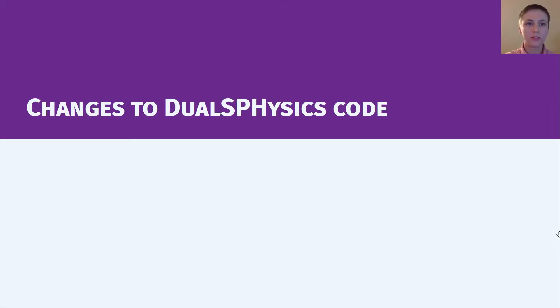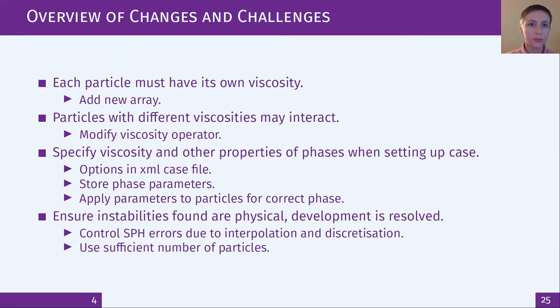Next the changes I've made to the DualSPHysics code. As an overview for variable viscosity between particles we must introduce a viscosity array so each particle can have its own viscosity. So that these particles can interact maybe with different viscosities, the viscosity operator in the momentum equation must be modified. Then to choose viscosity for each phase when setting up a case we introduce new options in the xml file, make sure the code can store the parameters of each phase and apply it to particles according to their phase. Any instabilities must be physical so we need to be mindful of errors introduced by SPH interpolation and discretization by considering the smoothing length of particle spacing which also affects the capability of resolving deformations.